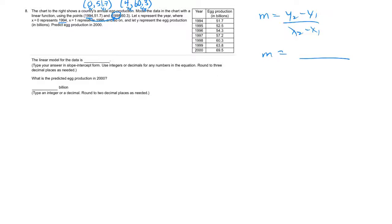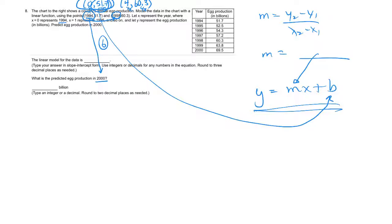And then for this one, because they gave me that point right there, that point, whenever x is 0, this value here is the y-intercept. So that's what b is. So when I'm writing my equation, this m is going to go right there, and then this number, 51.7, will be my y-intercept. Now once I have that equation written out, then it says, what's a predicted egg population in 2000? Well, from 1994 to 2000 would be 6 years. So once you have this equation, then I'm going to put 6 in for x and solve.